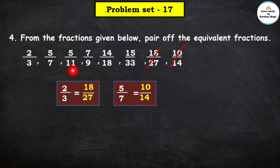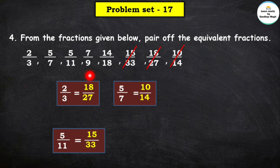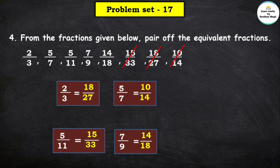Next fraction is 5 upon 11. In the 11 times table, the number available as a denominator is 33. Since 11 × 3 = 33, we multiply: 5 × 3 = 15. So 15 upon 33 is the equivalent fraction of 5 upon 11. Next is 7 upon 9: 9 × 2 = 18 and 7 × 2 = 14. So 14 upon 18 is the equivalent fraction of 7 upon 9.